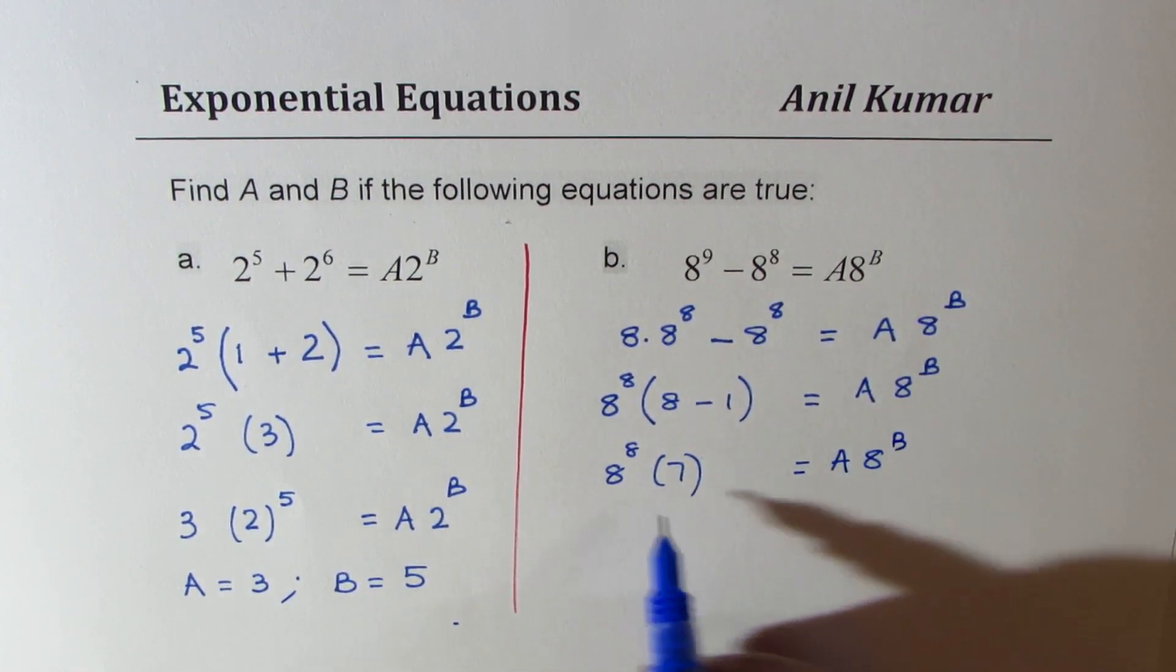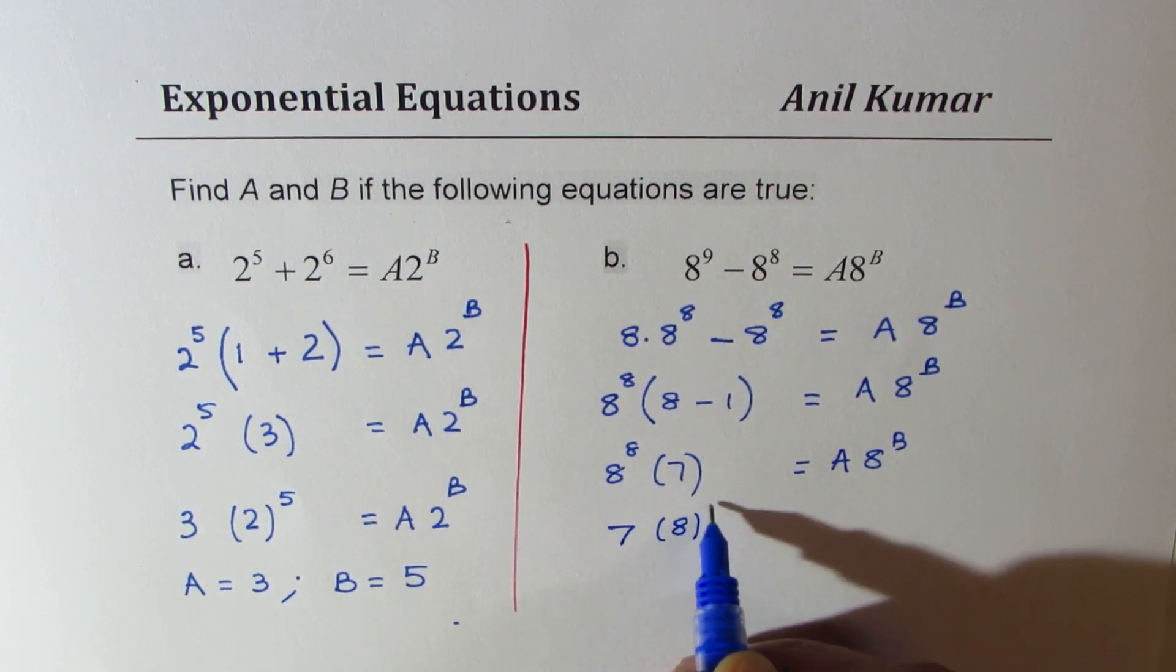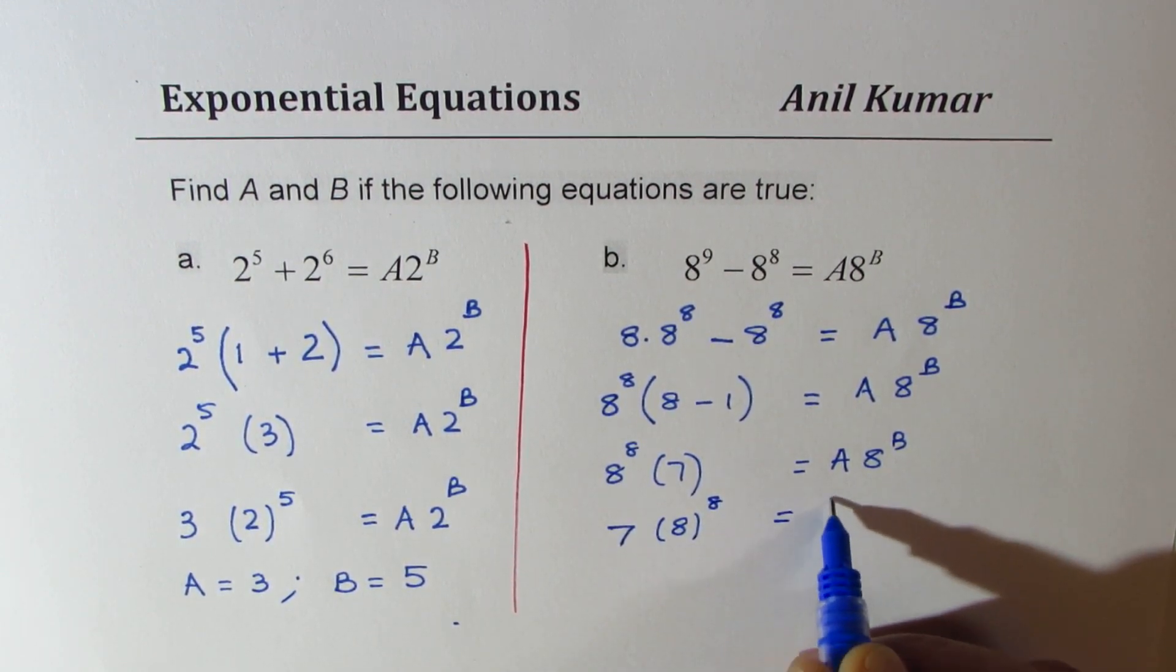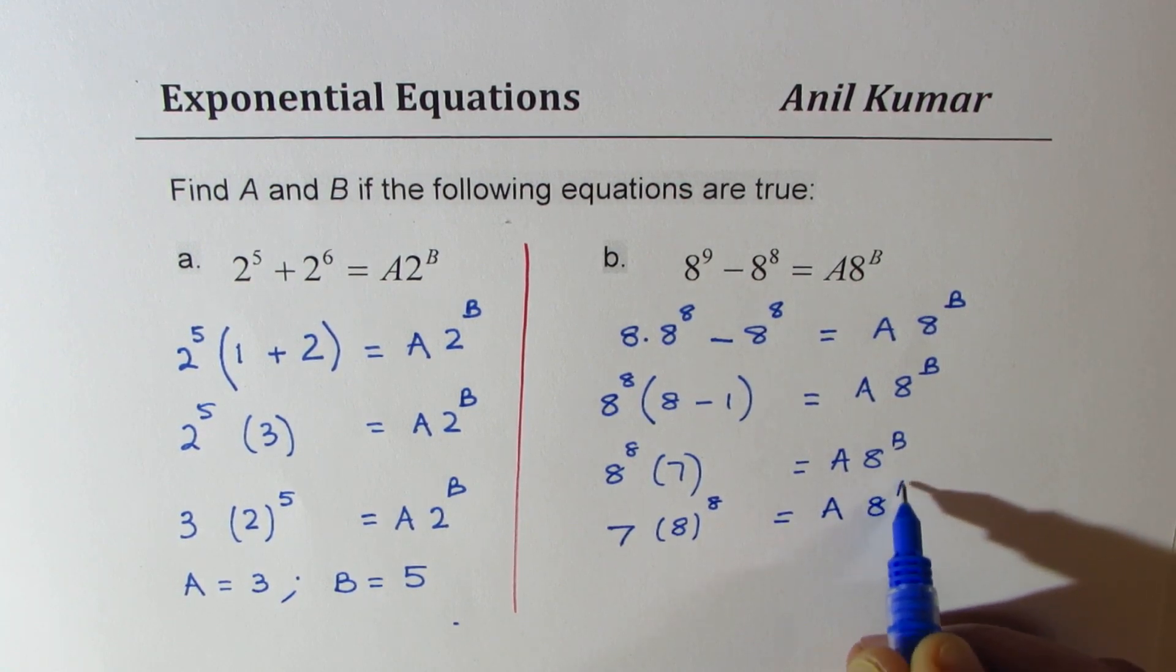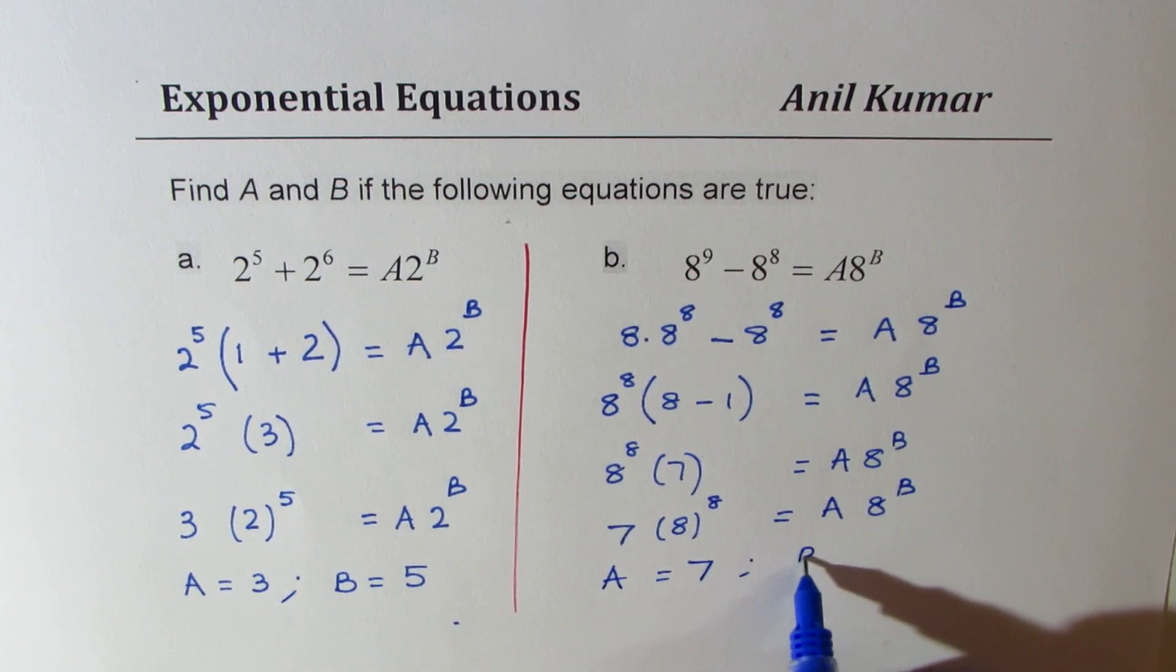Now if you compare, you get your answer, right? So it is 7 × 8^8, which should equal A × 8^B. So in this case, A = 7 and B = 8.